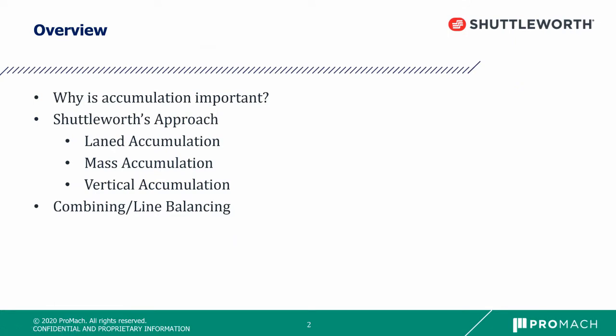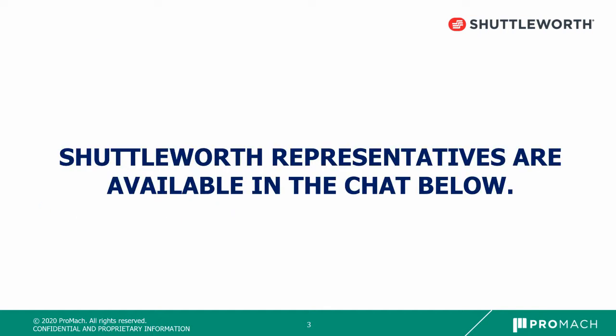First, we will discuss the importance of accumulation. We will show you a simplified example of how accumulation can alleviate challenges like unplanned downtime. Then we will get into Shuttleworth's approach to solve the problems through dynamic accumulation. Lastly, we will discuss how we can combine the accumulated product smoothly back into the production line and balance the flow of product. Please keep in mind, we are available right now through the chat if you have any questions throughout this presentation.